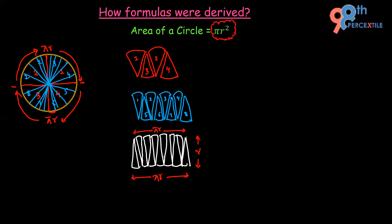We learned in the previous video that the area of a rectangle is length times width. If I find the area of this rectangle, it will be length times width. The length of this rectangle is πr and the width is r. So that's how we get πr².